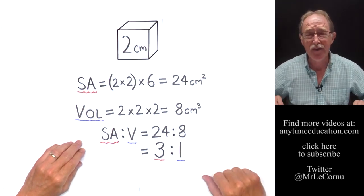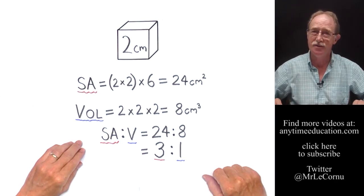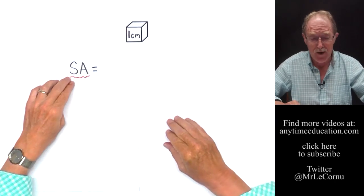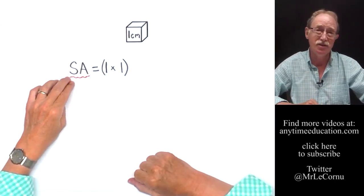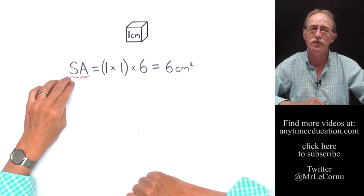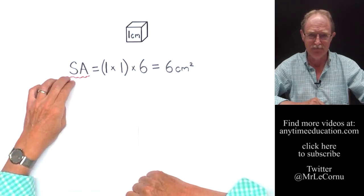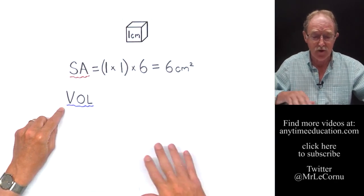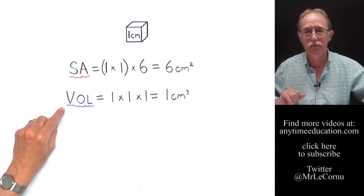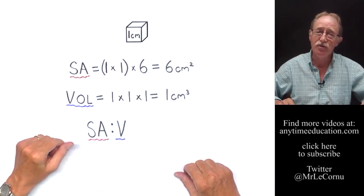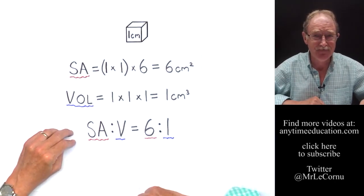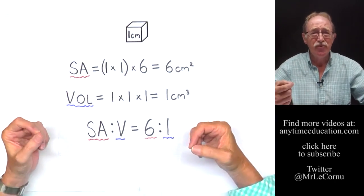Now let's look at the smallest cube — the one centimeter cube. The surface area: one by one for each side, six sides, so six centimeters squared. The volume: one times one times one, which is one centimeter cubed. So the surface area to volume ratio is six to one — no need to cancel.